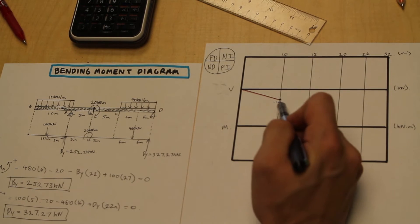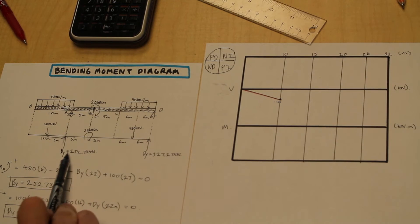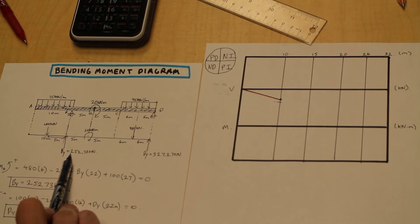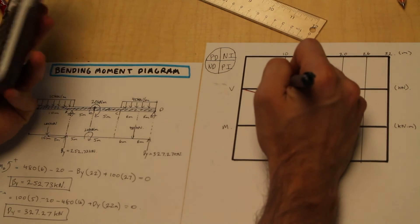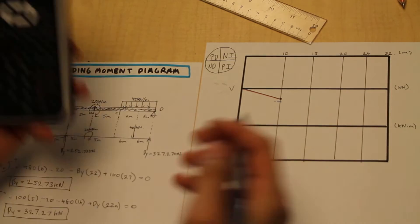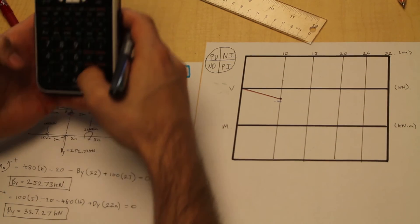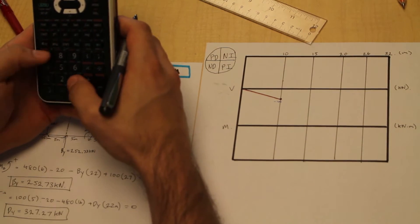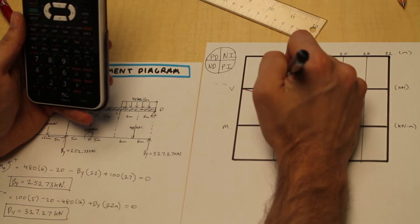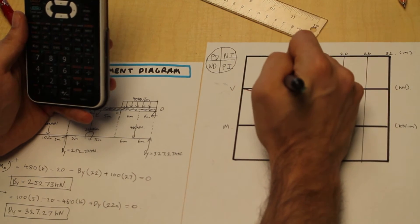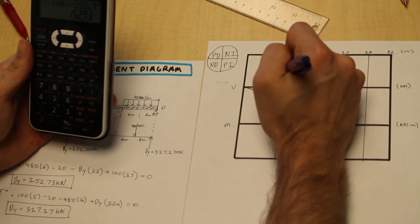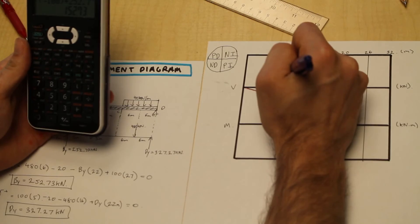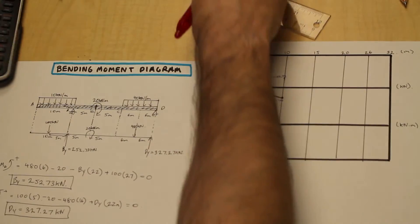So what do we do here? We go to negative 100 and we simply add 252.73 to that. And whatever we get is where we're going to continue our shear diagram from. As simple as that. So we're going to do negative 100 plus 252.73, and we're going to end up at 152.73. Simple, right?